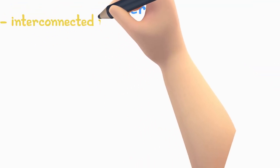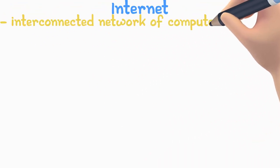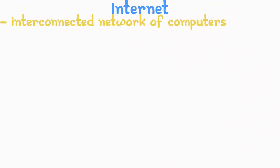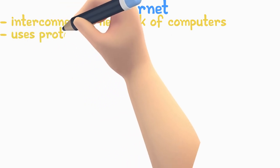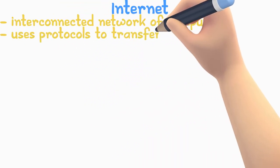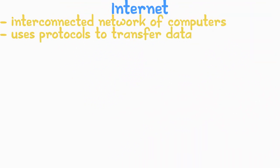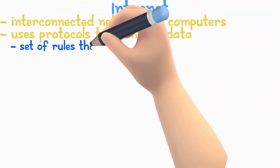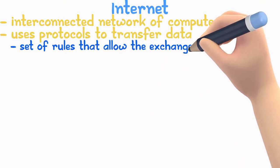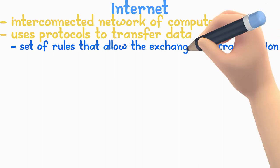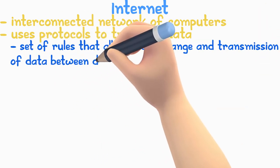The internet is the interconnected network of computers. The internet uses protocols to transfer data. Protocols are rules that allow the exchange and transmission of data between devices.